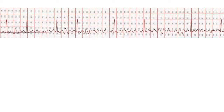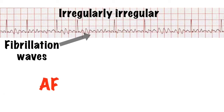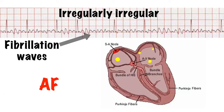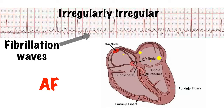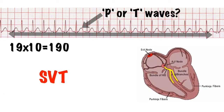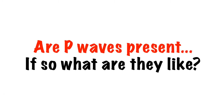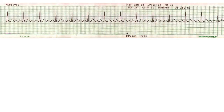Absence of discernible P waves with an irregular QRS complex is almost certainly going to be atrial fibrillation, where the atria are firing rapidly and randomly and the AV node gets overwhelmed and only allows some impulses through. An apparent absence of P waves with a narrow complex tachycardia could be supraventricular tachycardia.